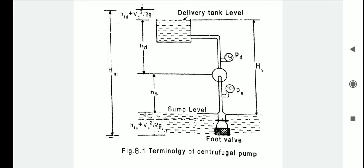In other words, the actual head against which the pump works is known as manometric head, HM. It is therefore in general equal to Euler's head minus the various hydraulic losses. By applying Bernoulli's equation between the sump and the delivery tank level, HM equals (PD minus PS) / ρg, which equals HS plus HD plus HFS plus HFD plus Vs² / 2g, which also equals HC minus (Vs² minus Vd²) / 2g. Here HFS and HFD are the frictional losses due to friction in the suction and delivery pipes respectively.